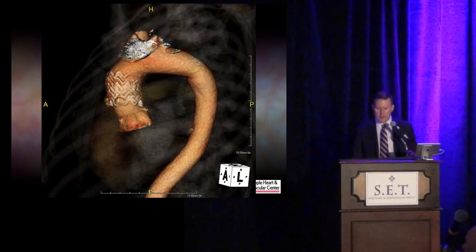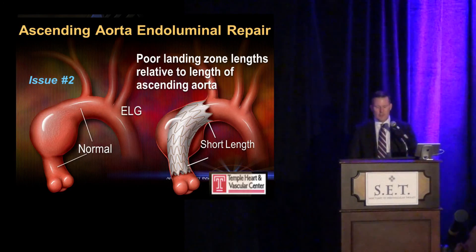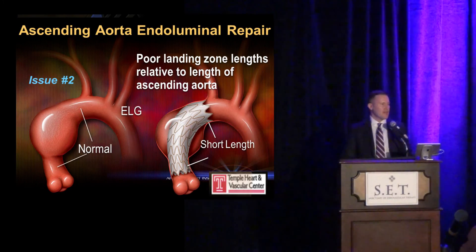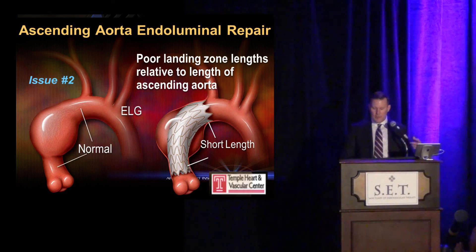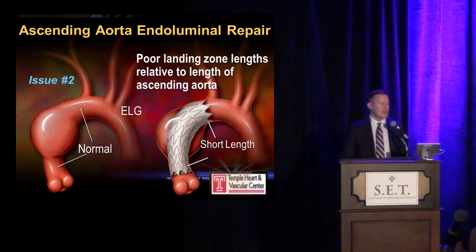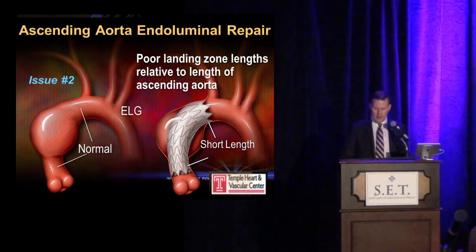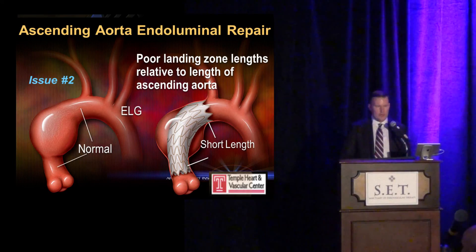The second issue is the challenges with landing zones. We like 2 centimeters of healthy landing zone, and we can stretch that in more challenging situations. But the ascending aorta is a short, angulated area, and there are very few cases where we can get 2 centimeters proximal and distal to the root as well as proximal to the innominate artery.